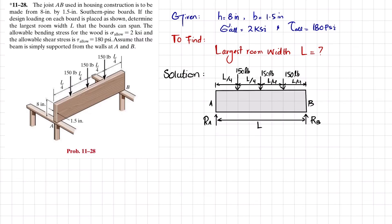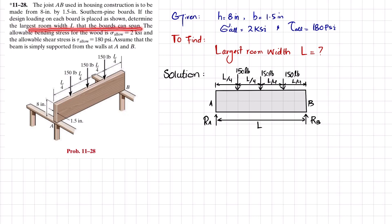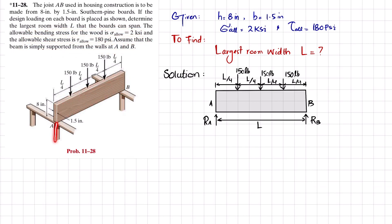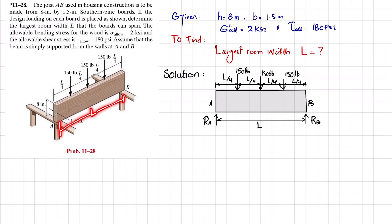Welcome back. Problem 11-28: the joist to be used in housing construction is to be made from an 8 inch by 1.5 inch southern pine board. The design loading on each board is 150 pounds as shown. Determine the largest room width L that the board can span. The allowable bending stress for wood is 2 ksi and allowable shearing stress is 180 psi. The beam is simply supported at walls A and B.